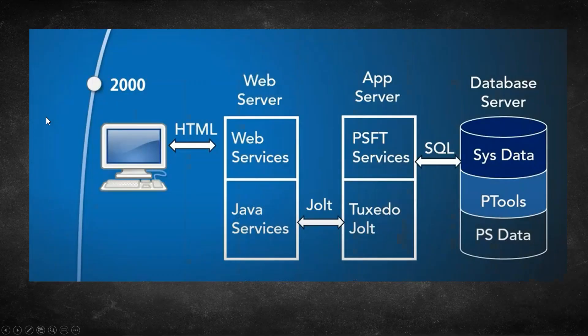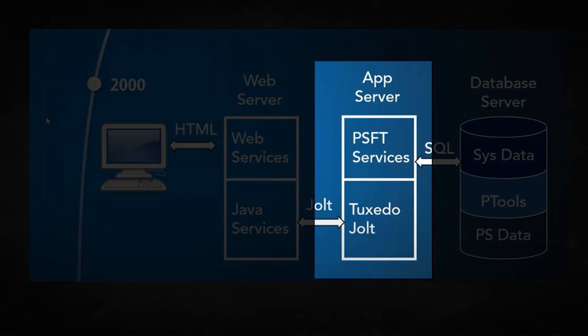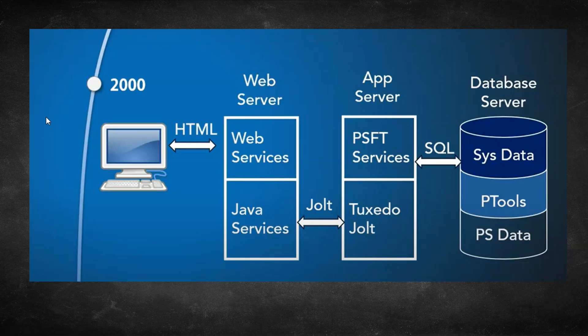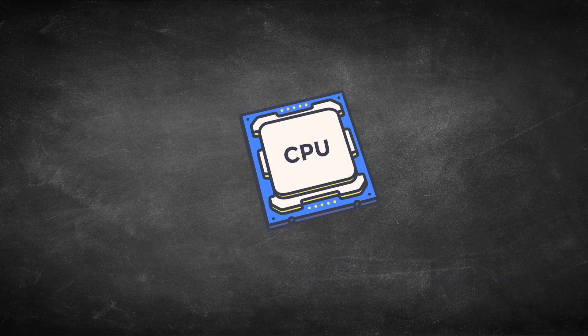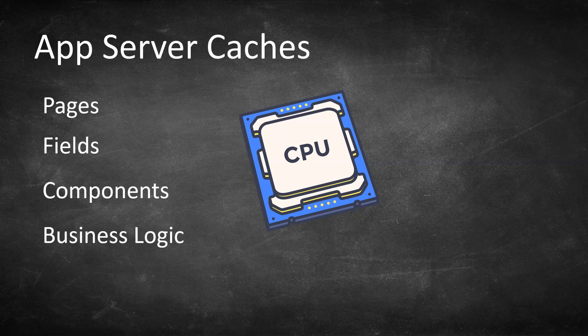Let's move to the second part of this episode: bouncing the Application Server. There will be several processes running on the app server mainly to fetch information requested by the end user, which includes fields, pages, components, and business logic. Since the app server is processor-intensive, it should be installed on a machine having the fastest CPU possible. As for what gets cached on the app server: frequently requested pages, components, and business logic. Now let's do a hands-on exercise and bounce our application server.